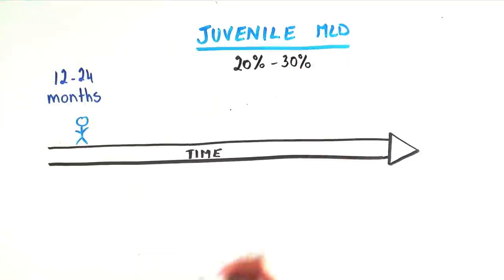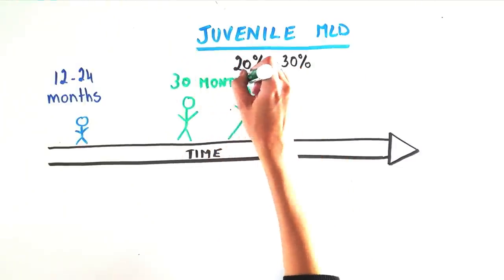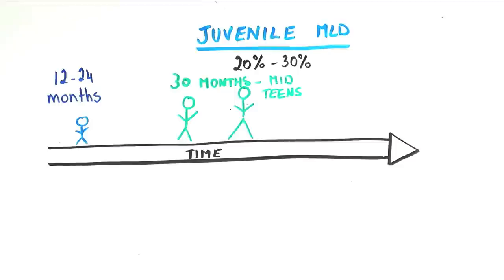Juvenile MLD occurs in 20-30% of cases, with onset of symptoms between 30 months and the mid-teens. These children often show a decline in balance or walking,